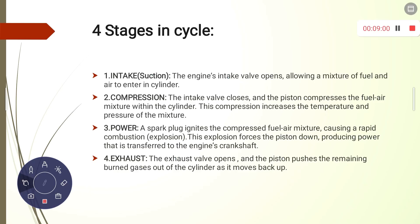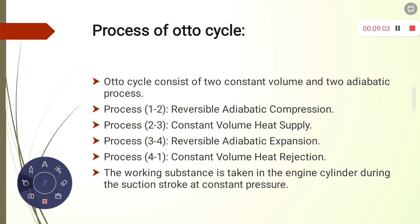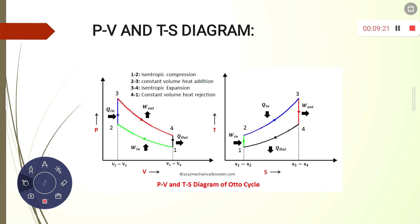So now we have learned about the four stages in the cycle. Now let's learn about the processes in the Otto cycle. Basically there are four processes — two processes are constant volume and two are adiabatic processes. We will understand these in detail through the PV diagram.